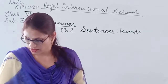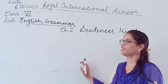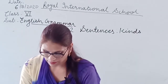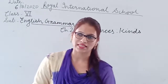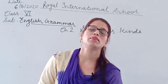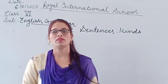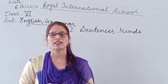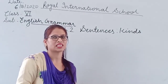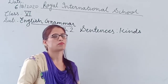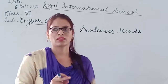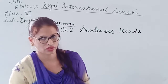Hello, good morning my dear students. Today I will teach you English grammar for Class 6 and I am going to start a new chapter - Chapter 2: Kinds of Sentences. In Chapter 1, we learned that a sentence is a group of words which makes a complete sense. A sentence always begins with a capital letter, words are placed in a proper order, and a sentence ends with a full stop, question mark, or a sign of exclamation.